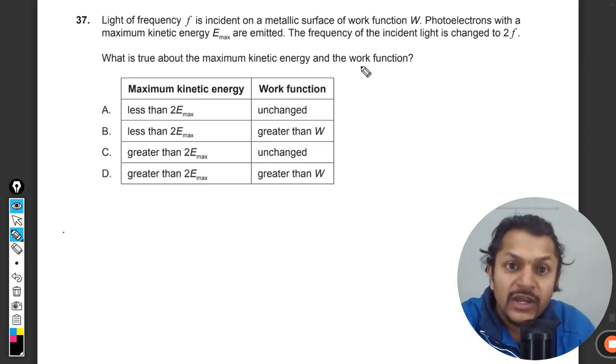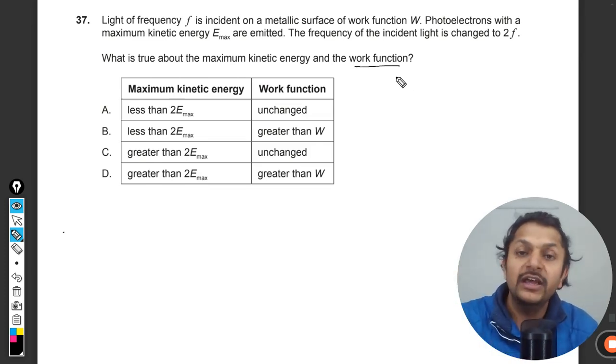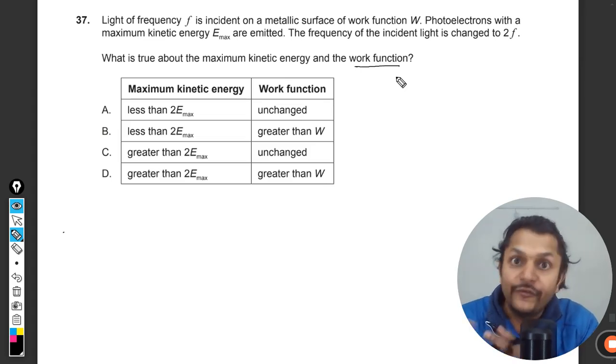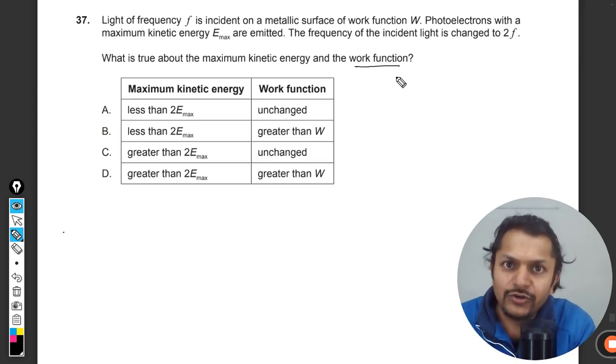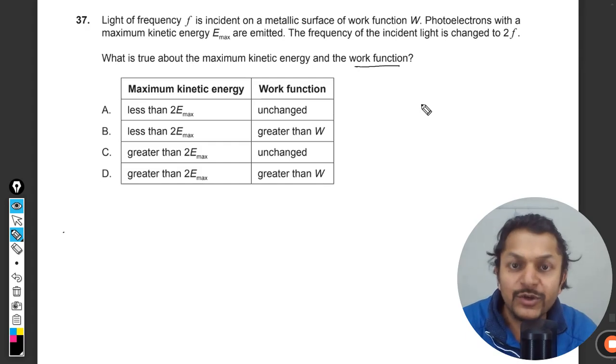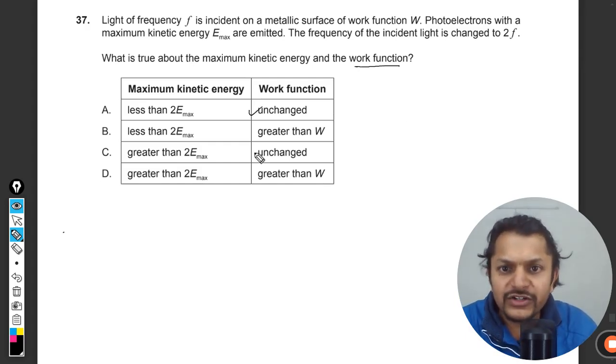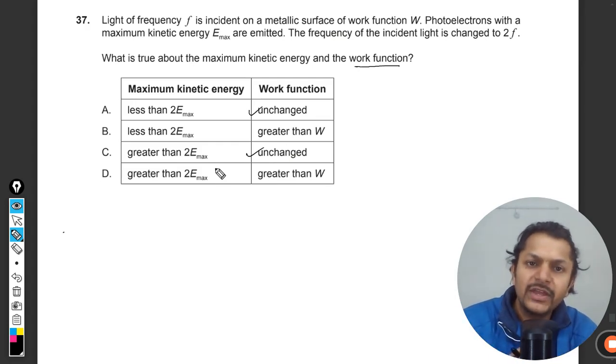One thing is very clear in this question. Work function is the property of the material that you are using, like the photosensitive material such as zinc. It has nothing to do with the light which is falling on the material. So work function is not going to change because it is the function of the material. Work function is definitely unchanged.